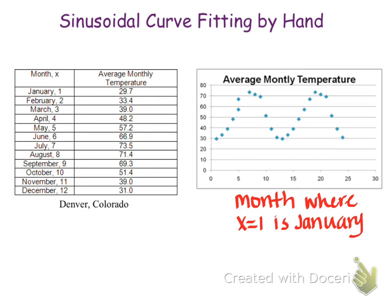This video is going to show you how to fit a sine curve to a set of data by hand. So we're going to start with our data table here, and you can see that it's the temperature in Denver, Colorado, and it's the average monthly temperature over one year. Notice that I let the x value of 1 be January, which makes 12 be December.